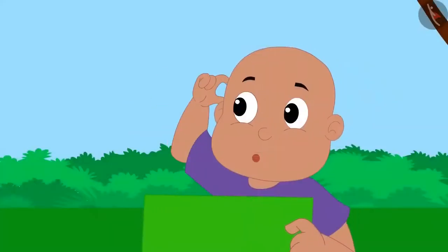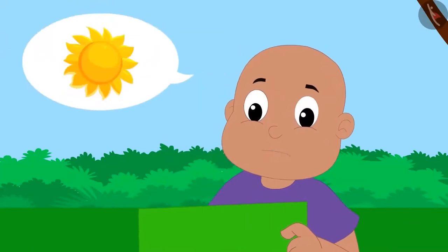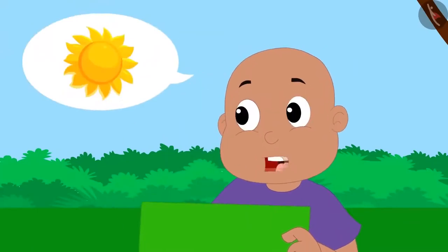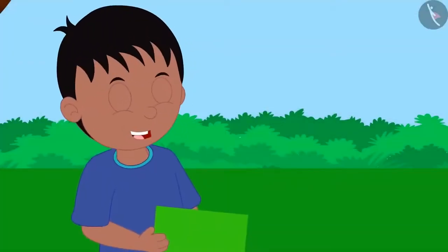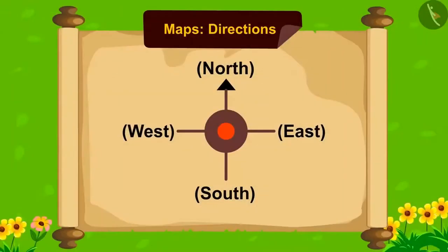Bablu asked: but there is no sun shown on this map, so how do you recognize the directions? Raju explained: this is called a compass. Using this we can determine directions on any map. There is an arrow on it — the head of the arrow always points towards the north and the end towards the south. Towards the left of north is west, and towards the right is east.